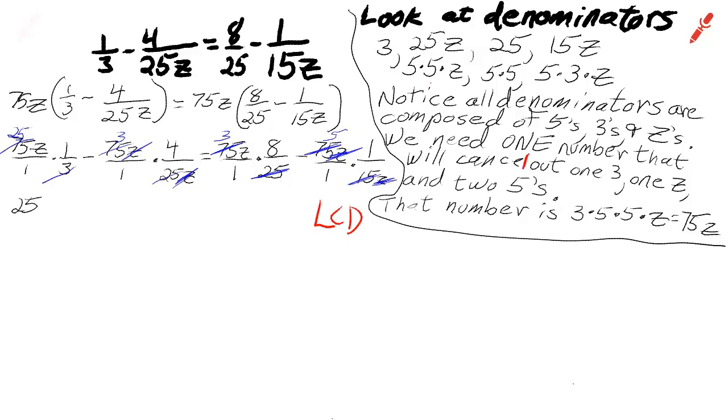Leaving me with 25z minus 3 times 4 which is 12, equals 3 times z times 8 which is 24z minus 5. Now all I have to do is solve this little equation. I have 25z minus 24z is 1z. Bring down the minus 12. The 24z zeroes out and I'm left with a negative 5.